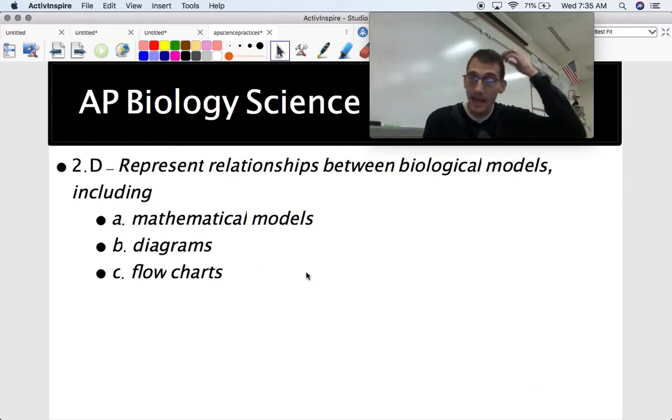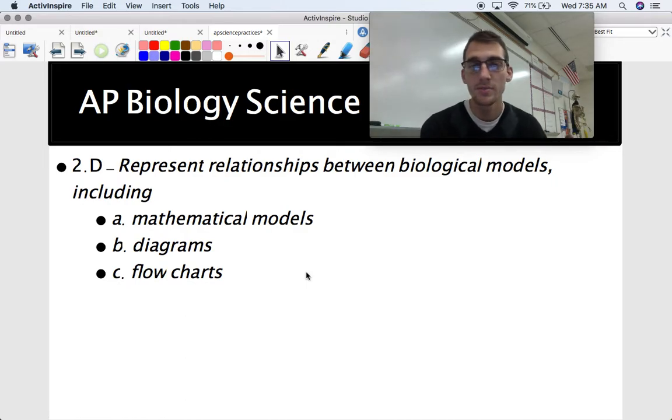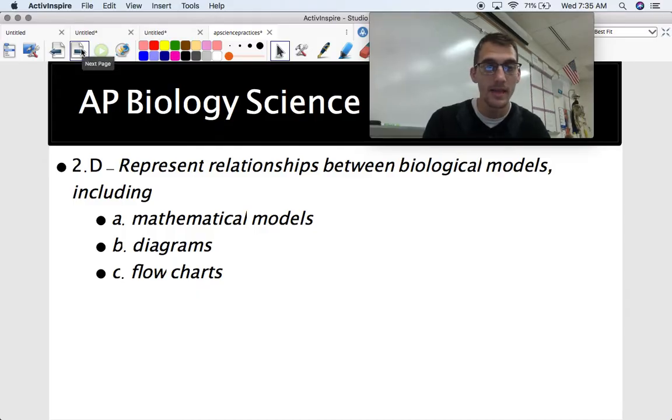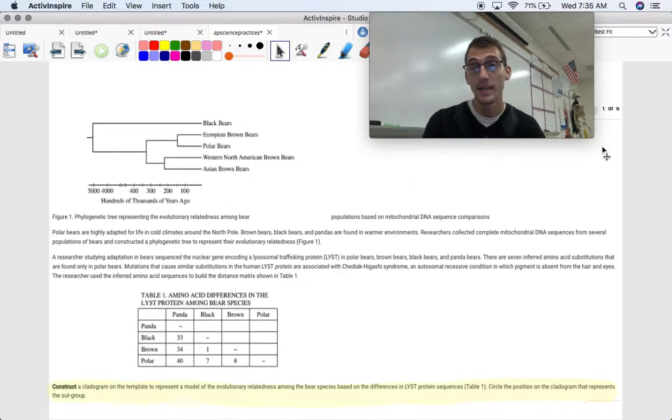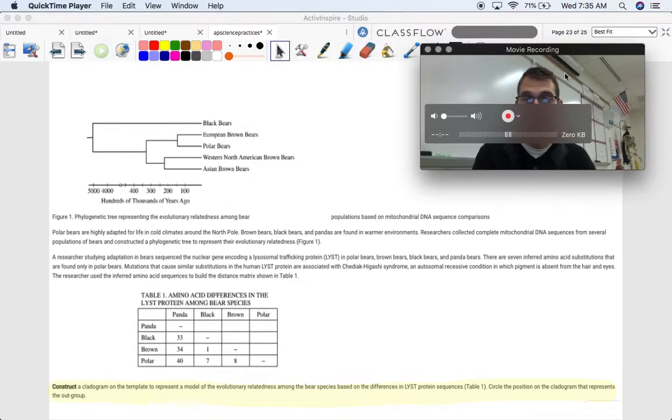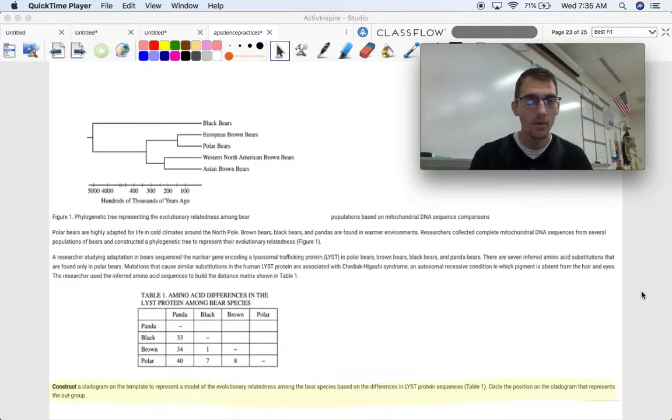And then 2.D, last sub-practice in this video that we're going to talk about, represent relationships between biological models, including mathematical, or biological molecules, including mathematical models, diagrams, and flow charts. I'm going to show you two examples here in just a second. But then they're kind of big. So I tried to make them bigger on the screen so that everybody could see. But this is, like I said, these are FRQs. They're not going to be any multiple choice questions, and they're going to ask you to draw or actually make a visual representation yourself.